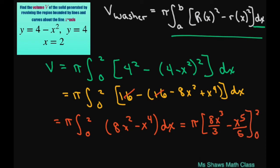So we only have to use this 2, and that's going to give you pi. And then you're going to have 8 times 2 cubed is 64 divided by 3 minus 2 to the 5th power is 32 divided by 5.